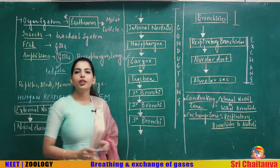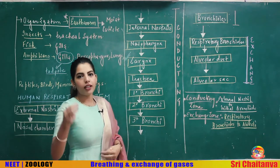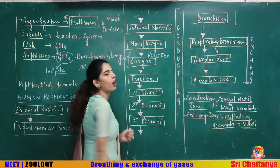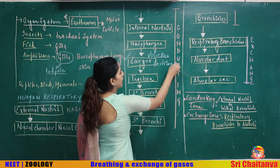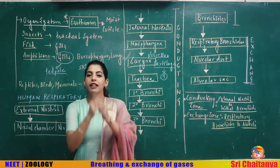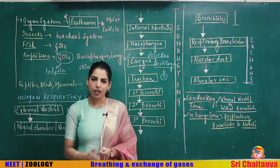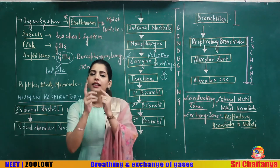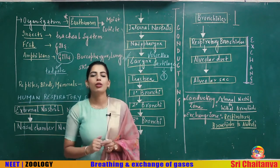The nasopharynx leads to the larynx, which is called the voice box. It helps in sound production and is made up of cartilage — nine cartilages in total. One of the cartilages, the epiglottis, is a cartilaginous flap that prevents food from entering the respiratory passage.